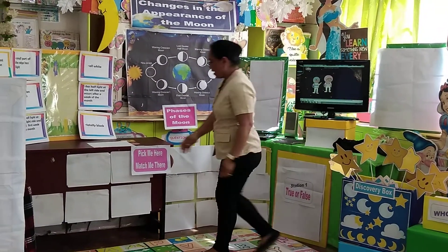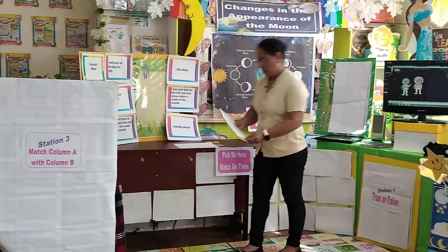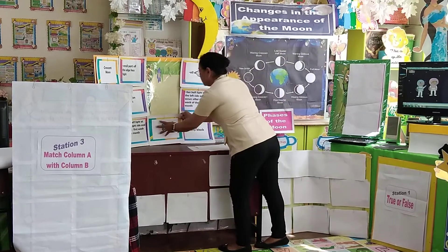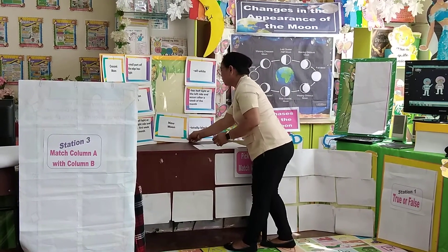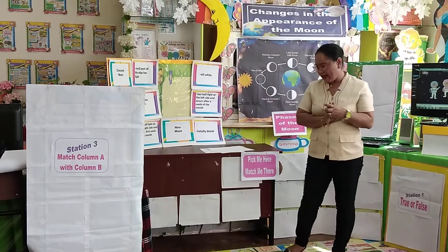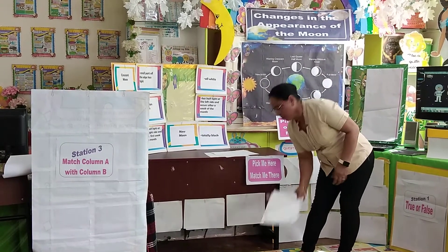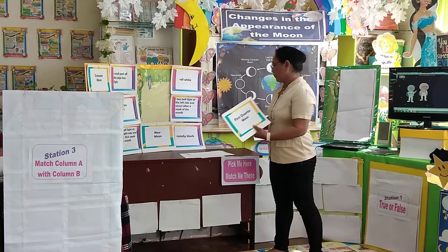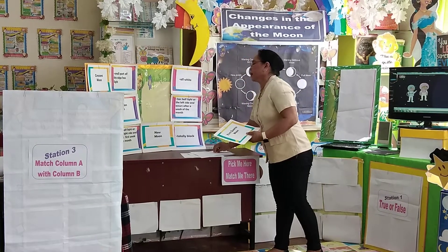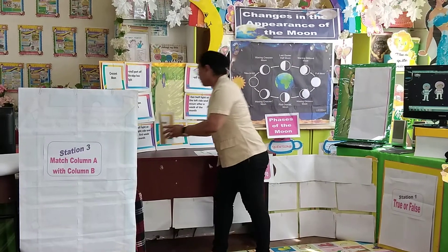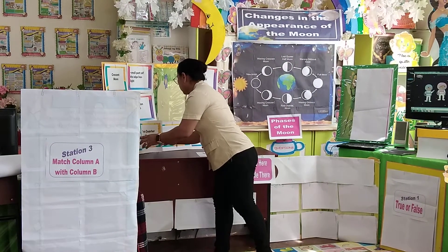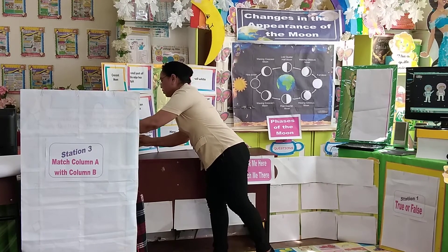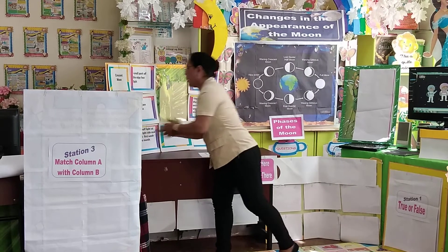Roy, next. What's that, Roy? New moon. What is new moon, Roy? New moon — very good, Roy — it's totally black. One more time. Rosemary. First quarter moon. What is first quarter moon, Rosemary? The half light at the right side occurs the first week of the month. Great, very good.